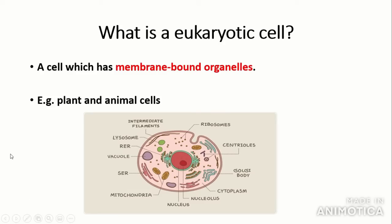So firstly, what is a eukaryotic cell? A eukaryotic cell is a cell which has membrane-bound organelles. This is a crucial term that you must remember as it is the main thing that separates eukaryotic from prokaryotic cells. This includes plant and animal cells. What I mean by a membrane-bound organelle is an organelle which has a membrane around it, for example mitochondria, nucleus and chloroplasts.